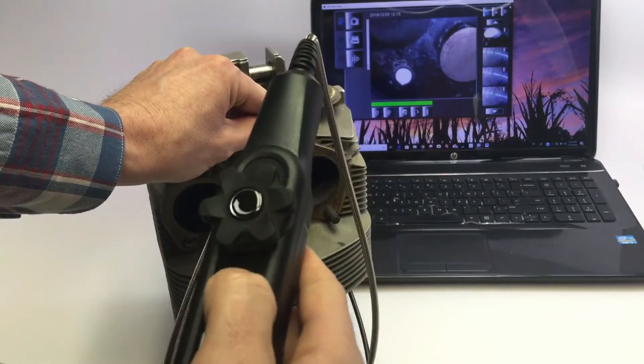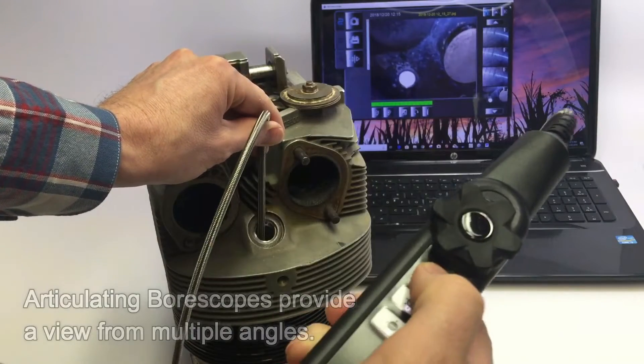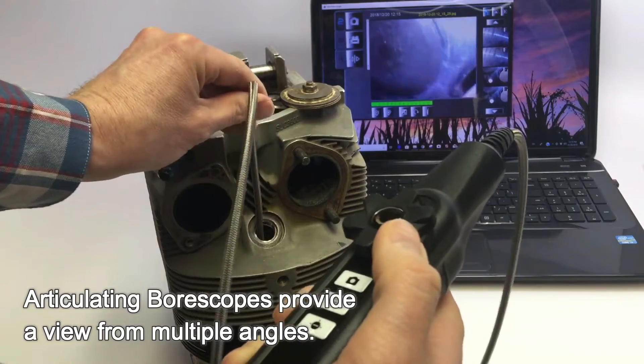Articulating boroscopes offer the most versatility and ease in getting to the angles that are needed for tougher-to-see objects.